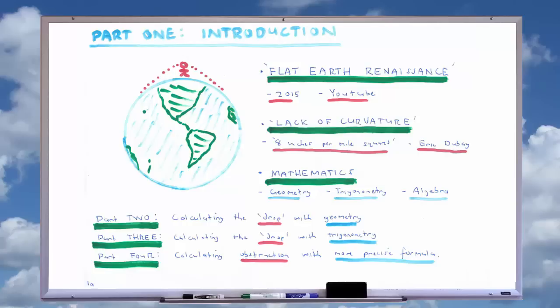Put simply, if an object less than 17 feet tall can be seen 5 miles away, or an object less than 600 feet tall can be seen 30 miles away, then the Earth cannot be a ball with a radius of 3,959 miles as claimed by NASA and all other establishment institutions.